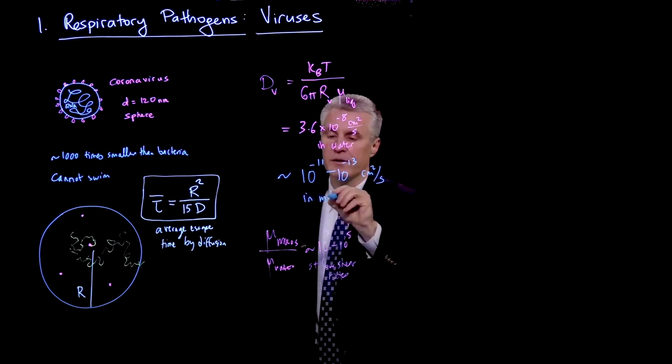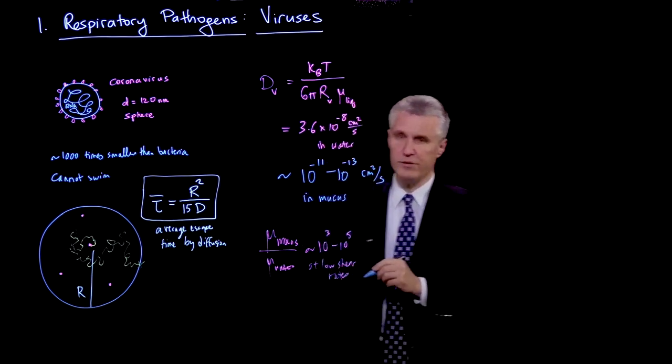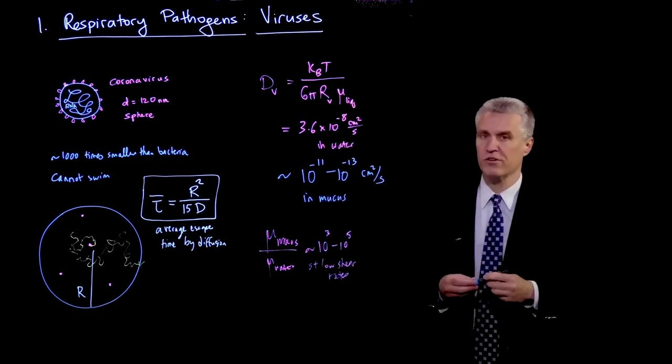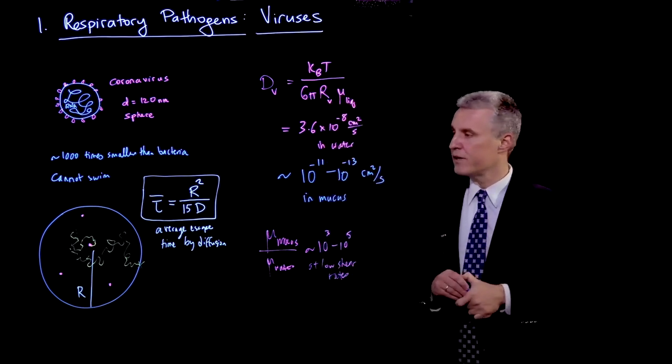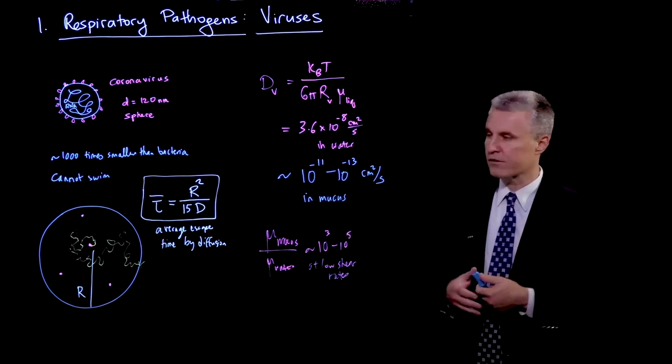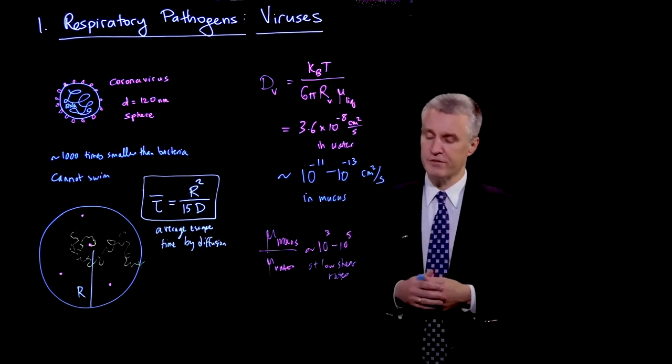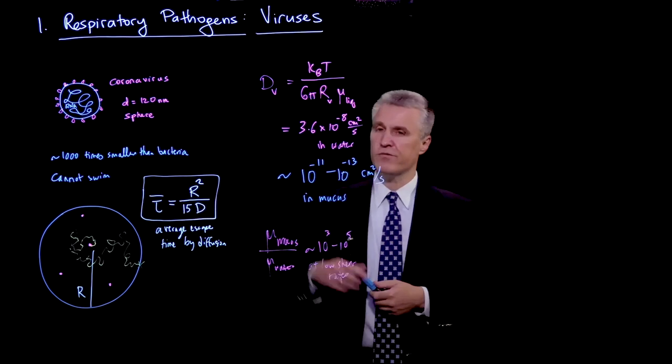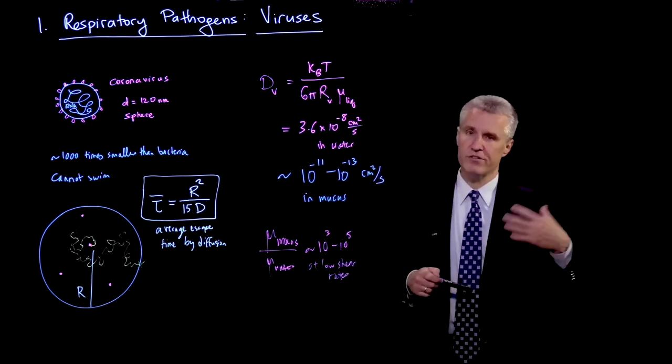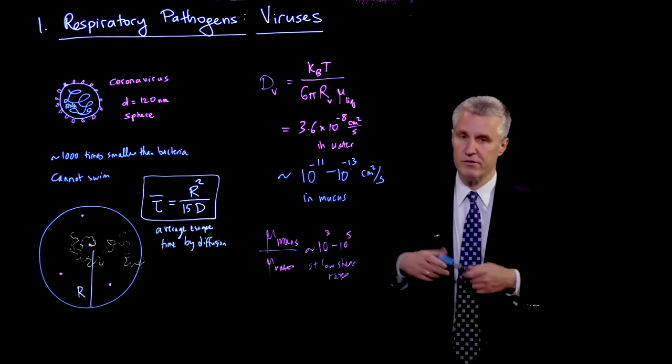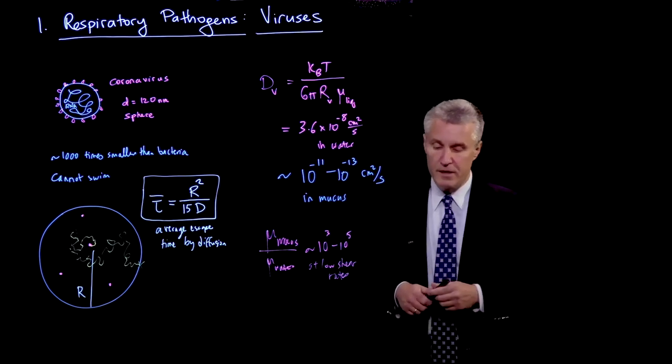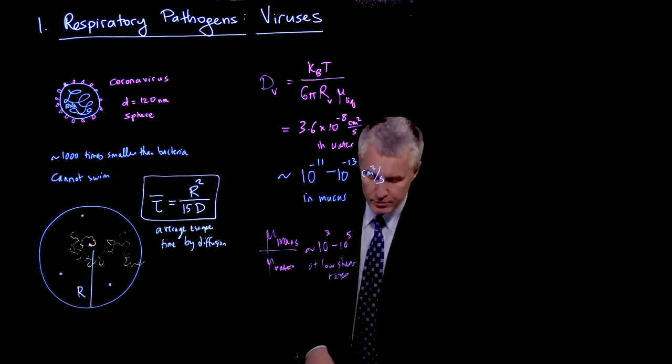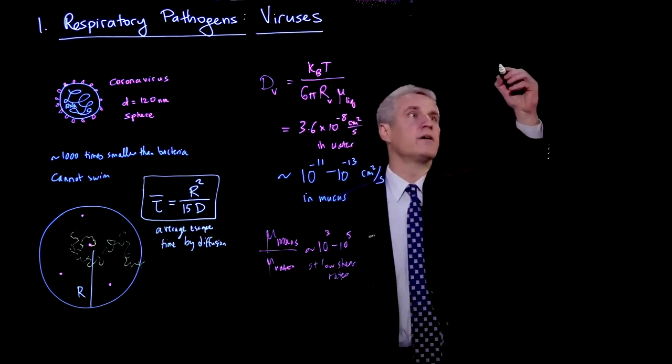So if we assume these are actually mucus droplets, which are not fully evaporating and are contained in aerosol form, then this is the kind of diffusivity. And if we plug into this formula here, we can get a sense of what is the average time for the virus or the virion to actually escape. So why don't we make a little table of that result?